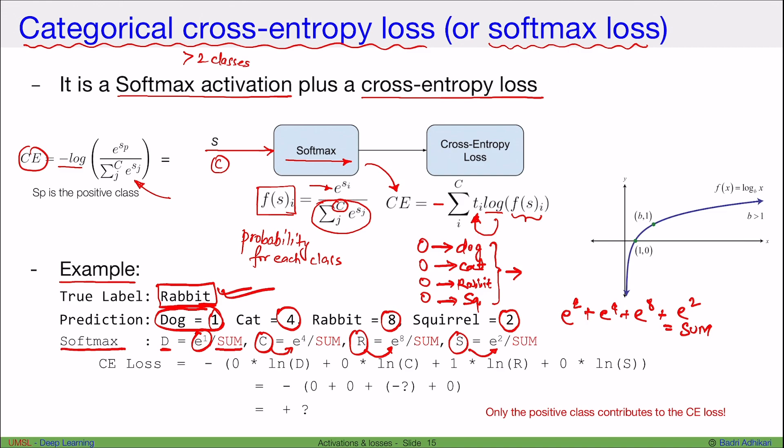So clearly, the probability for rabbit will be very high. But then the way we calculate cross-entropy loss is that we simply negate. And then for each class that's not true, we replace that by a 0. So since the true label is not dog, we make this 0. And since the true label is also not cat, we make this 0. And since the true label for rabbit is 1, we make this 1, and everything else is 0.